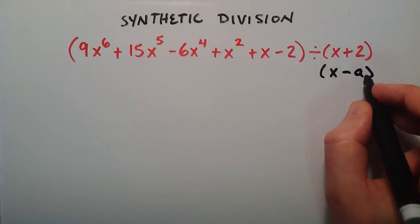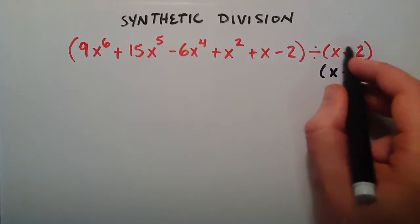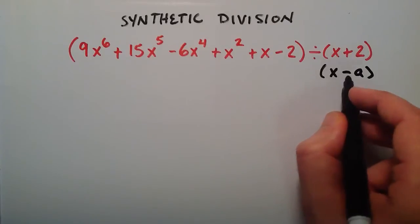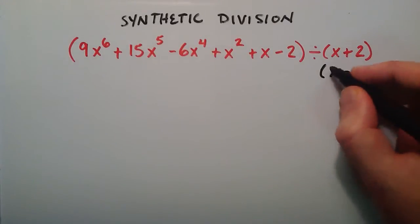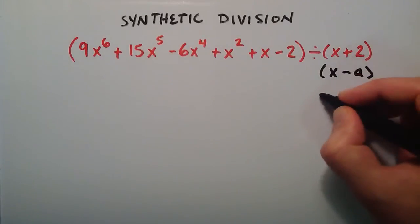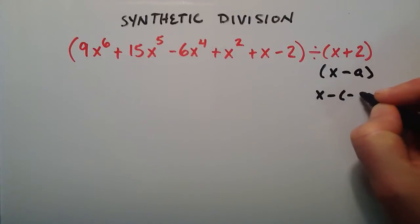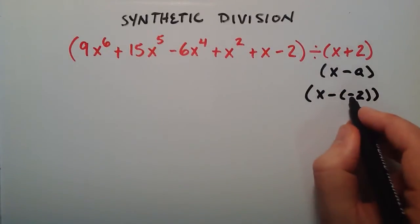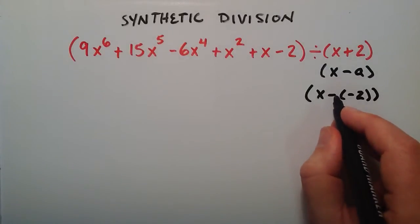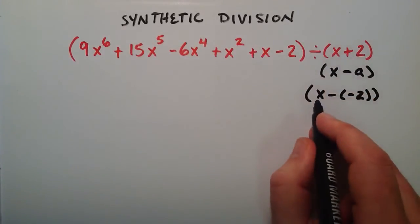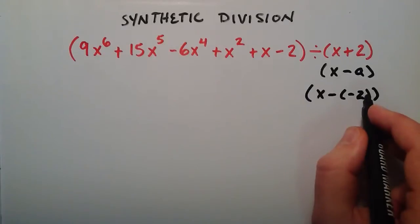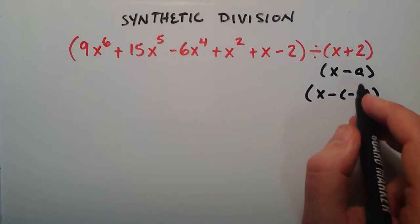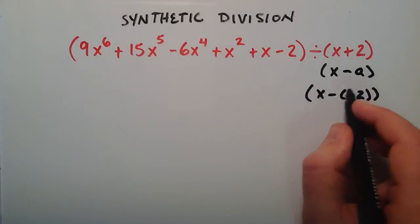So we need to get this part in the form of x minus something. So the way we do that is we can just rewrite this as x minus negative 2. Because if we subtract a negative it's the same thing as adding. So x plus 2 can be rewritten as x minus negative 2. And therefore our a in this case is going to be the negative 2.